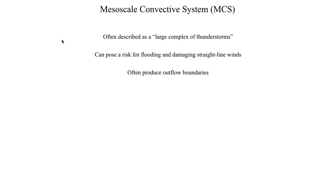One of the more important things about mesoscale convective systems is they typically produce outflow boundaries — those currents of cold air that travel in the horizontal direction. As we discussed in a previous lecture, those outflow boundaries can play a very important role in the development of severe weather later in the day. Usually if you get an outflow boundary in the spring, at the height of severe weather season, it's going to come from a mesoscale convective system — that massive complex of storms.